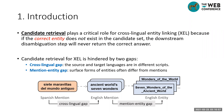Candidate Retrieval plays an important role in this task. In this step, if the correct entity is not retrieved from the whole knowledge base, the downstream steps will never return the right answers. In this paper, we focus on improving the quality of candidate retrieval. There are two gaps in this task. The first one is the cross-lingual gap, because different languages have different scripts. The second one is the mention-to-entity gap, since surface forms of entities are different from mentions.